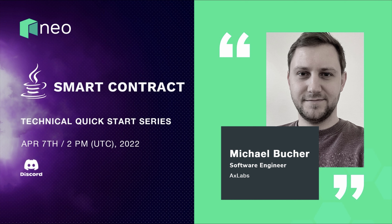Hello everyone and welcome to another workshop in the Polaris Hackathon series. Today we have a special workshop on smart contract programming with Java. With us is Michael Bucher, a software developer at Axe Labs. I joined Axe Labs more than two years ago and have been in the Neo ecosystem for more than two years. I'm mainly responsible for the neow3j SDK and compiler, and I'll show you today how to develop a smart contract and test it with neow3j.